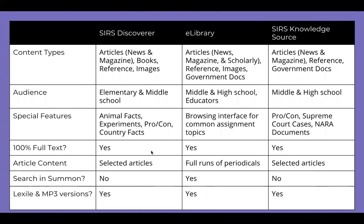They're all 100% full text because these are all aimed at novice researchers, so there's no problem with finding a citation they can't immediately access. Both SIRS Discoverer and SIRS Knowledge Source have articles selected individually every day by editors at ProQuest. The only one with full runs of periodicals is eLibrary, which is why SIRS Discoverer and SIRS Knowledge Source articles are not searchable in Summon, whereas eLibrary is.